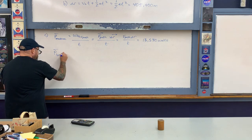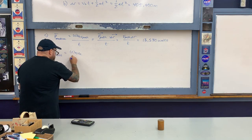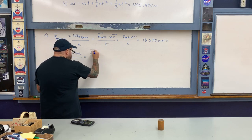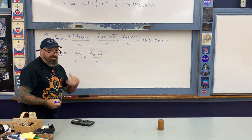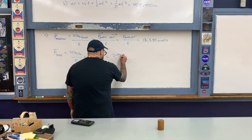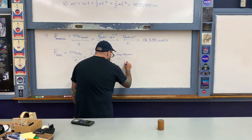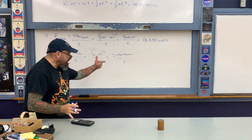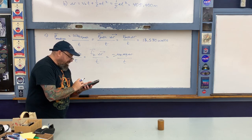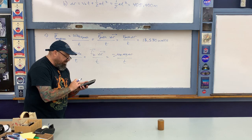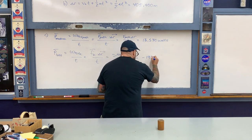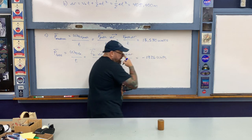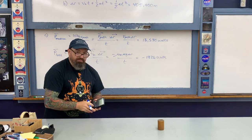Beyond the fuel and machine constraints, there's the problem of friction. The average power loss due to friction is the work done by kinetic friction divided by time. For a horizontal situation, this is negative (μ × m × g × displacement) ÷ time: −(0.1 × 1 × 9.8 × 405,900) ÷ 300 seconds = −1326 watts.